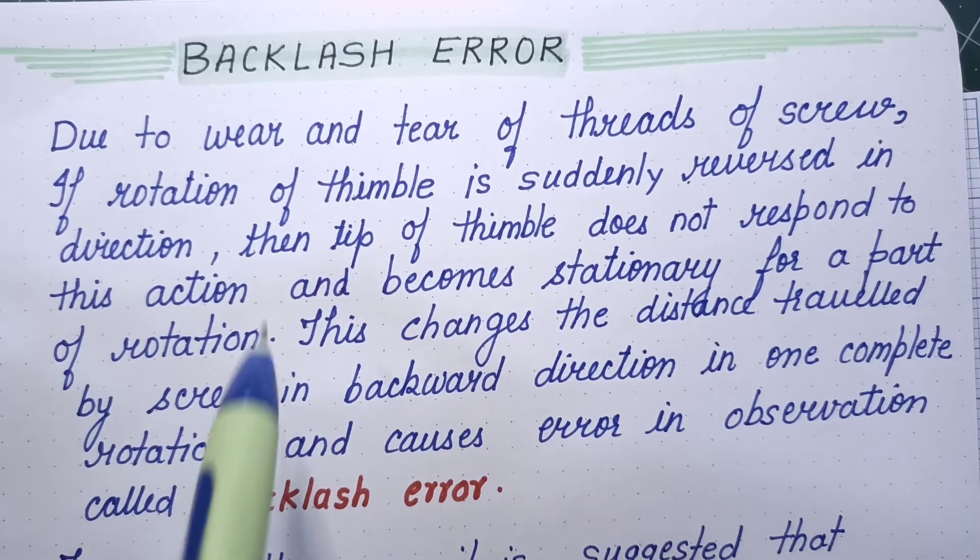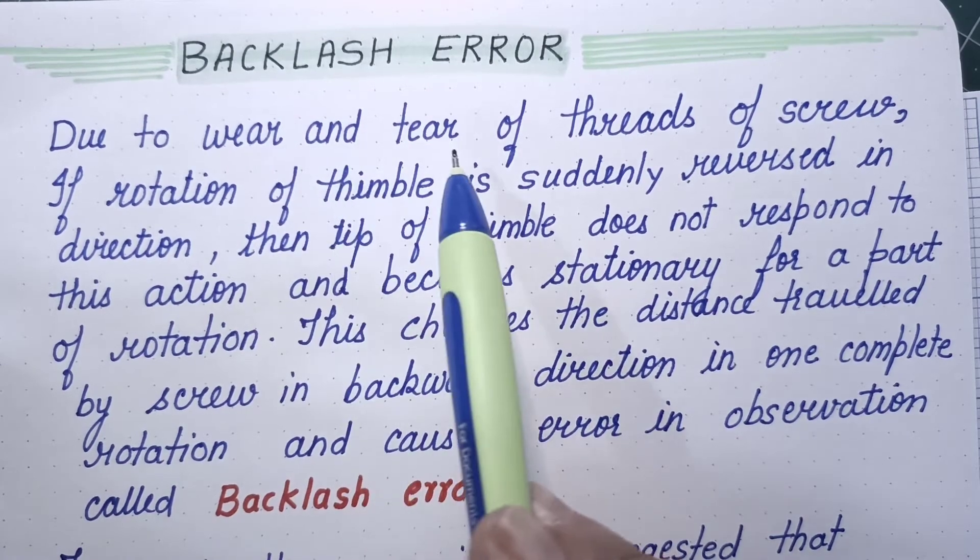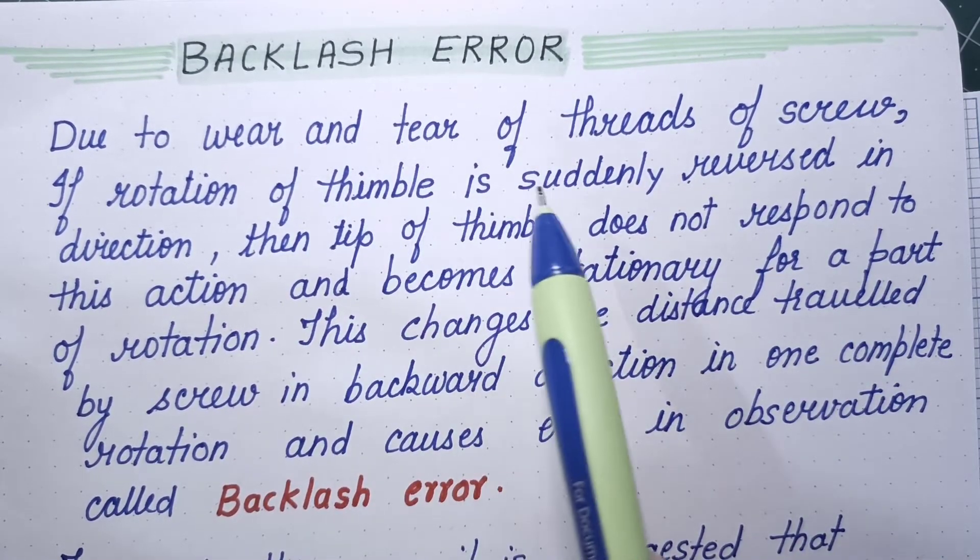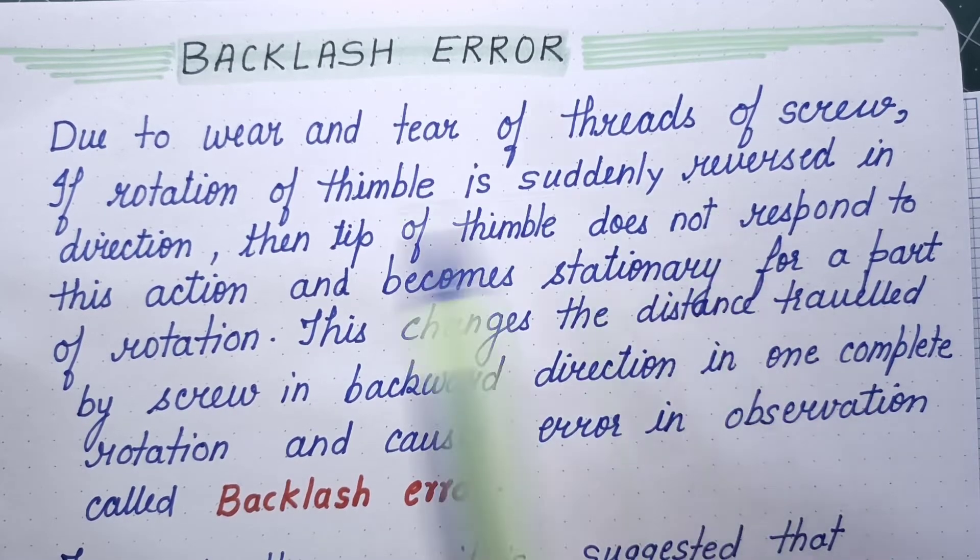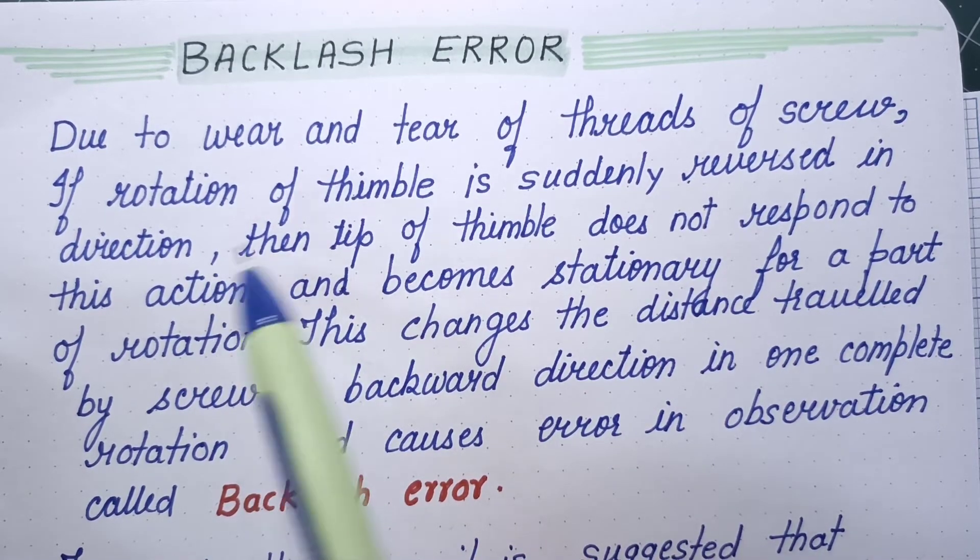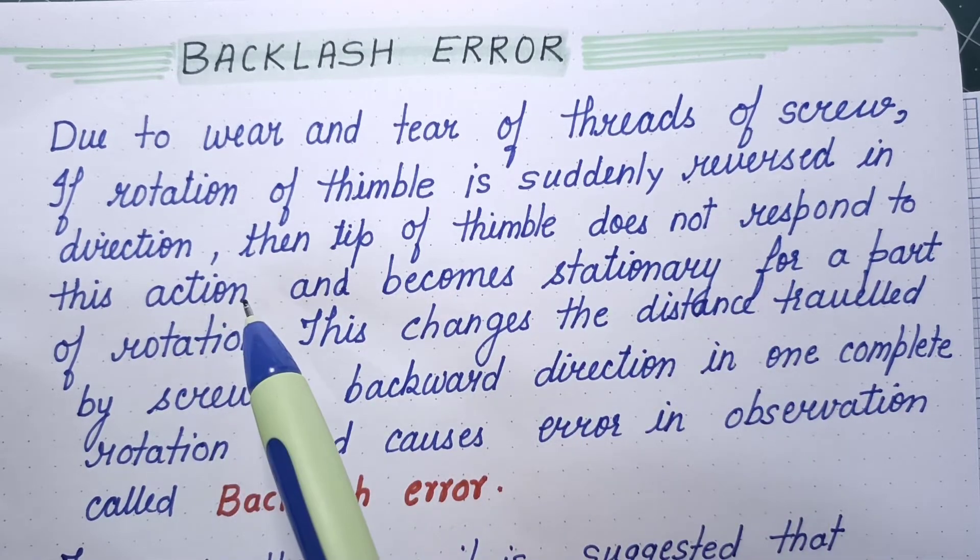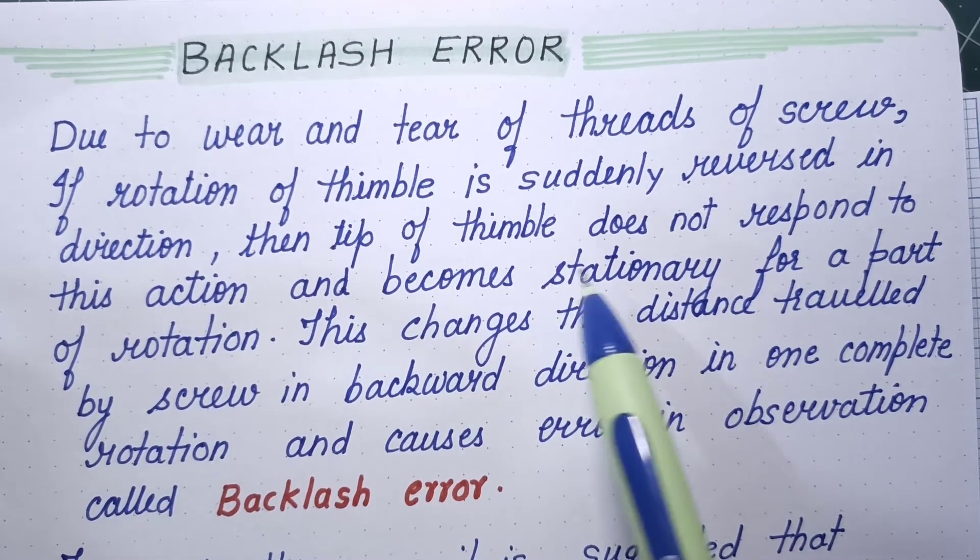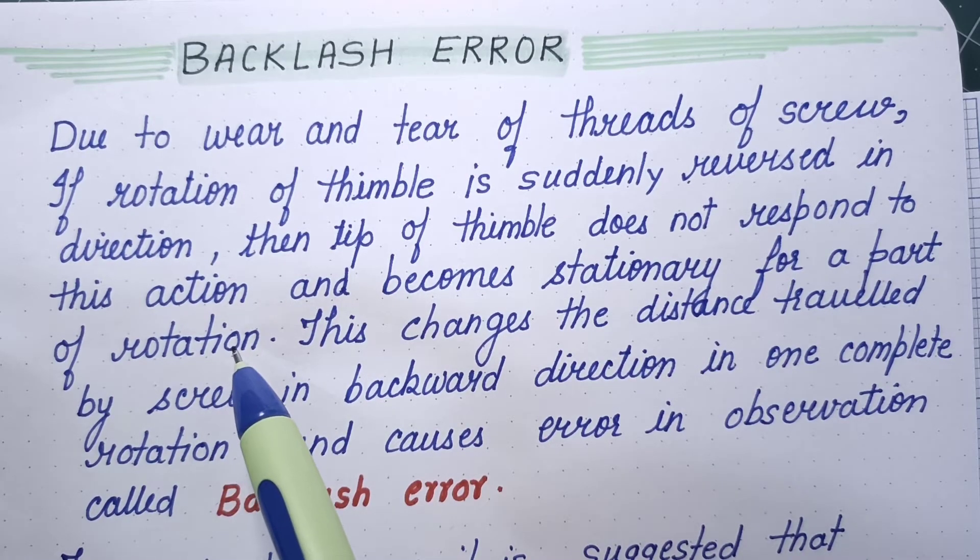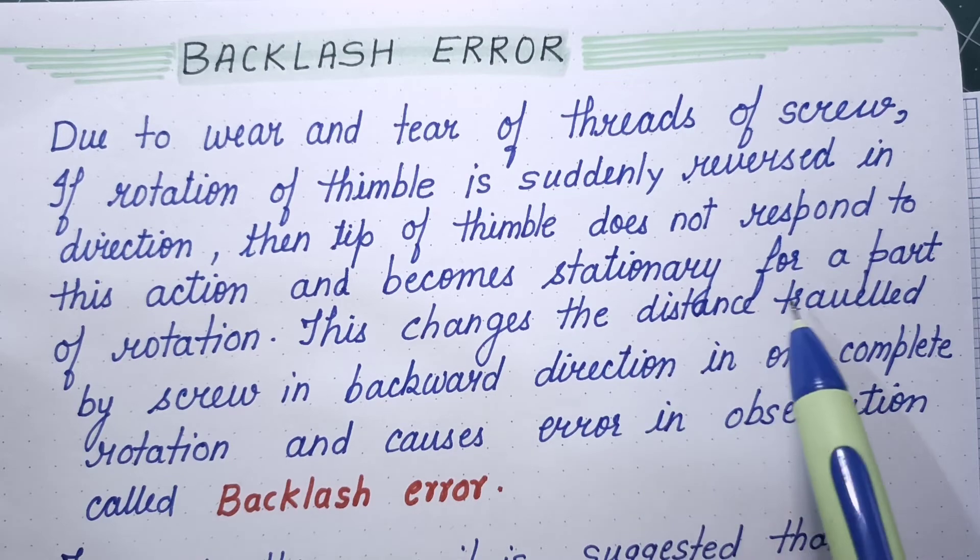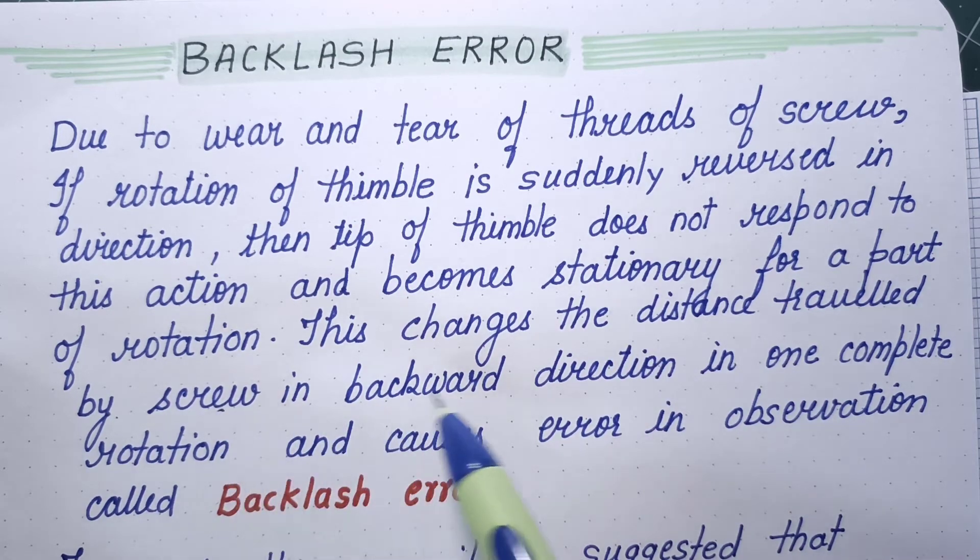Due to wear and tear of threads of a screw, if rotation of thimble is suddenly reversed in direction, then tip of thimble does not respond to this action and becomes stationary for a part of rotation. This changes the distance traveled by the screw in backward direction.